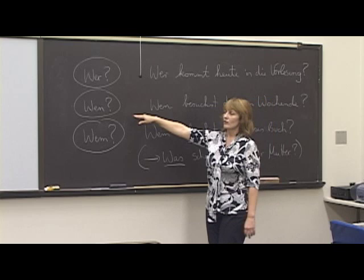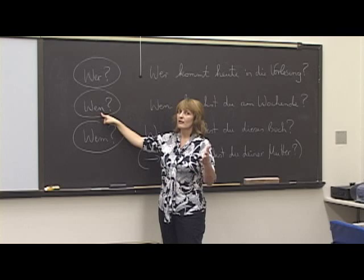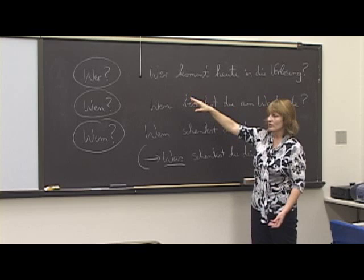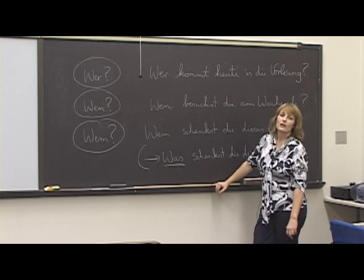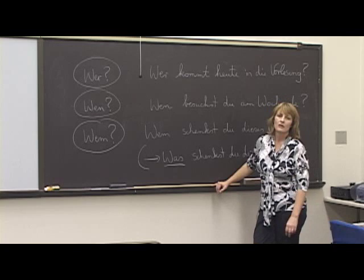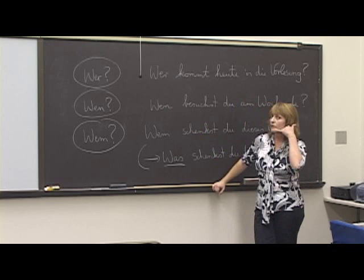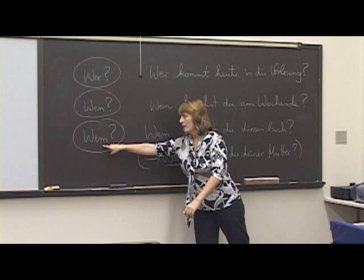When do you ask a question with wen — whom? When you're looking for the direct object. That's why it has the -en ending — masculine accusative. Wen besuchst du am Wochenende? Whom are you visiting? You are doing the visiting, so we're not looking for the subject — we're looking for the direct object. Wen siehst du jede Woche? Whom do you see every week? Wen rufst du an? Whom are you calling? You are making the phone call — I want to know the object of your call.